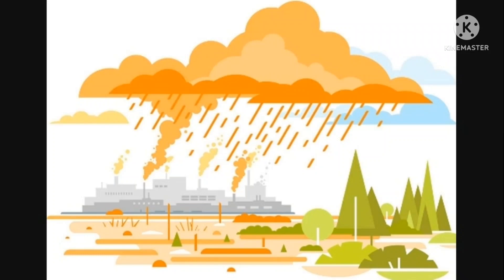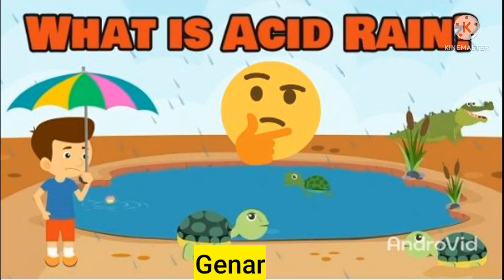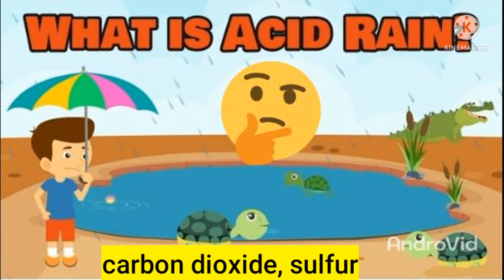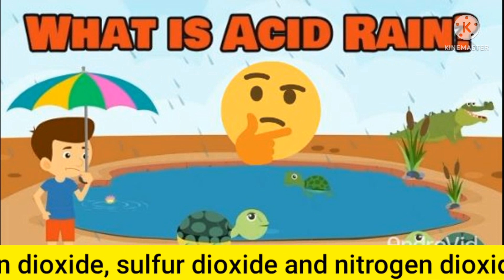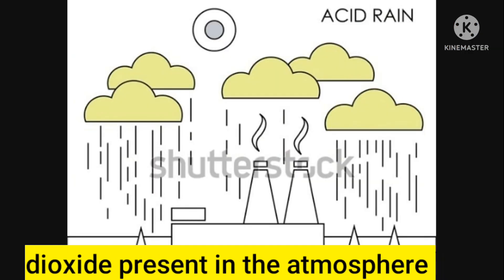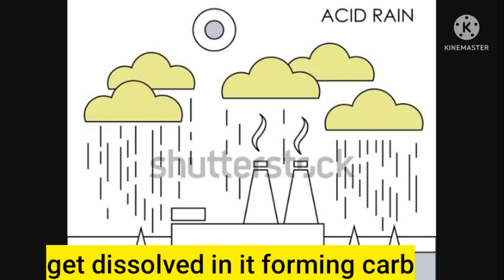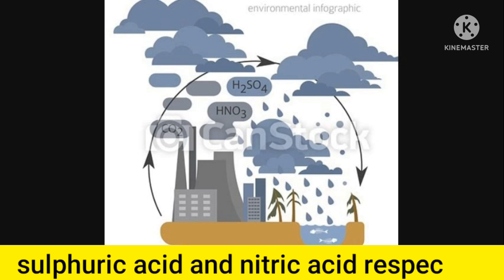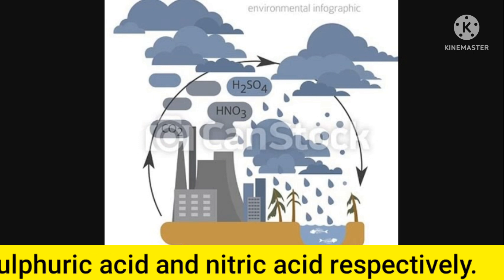Hi friends, today I will speak a few words about acid rain. What is acid rain? Generally, rain water gets acidic because carbon dioxide, sulfur dioxide and nitrogen dioxide present in the atmosphere get dissolved in it, forming carbonic acid, sulfuric acid and nitric acid respectively. Due to the presence of these acids,